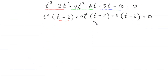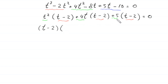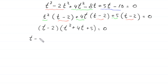The expression t minus 2 is a common factor, so we factor it out to get t minus 2 times t squared plus 4t plus 5, equals 0. From here, either t minus 2 equals 0, or t squared plus 4t plus 5 equals 0.